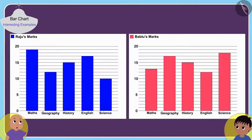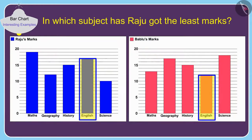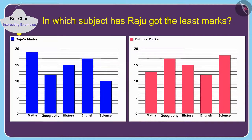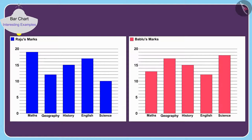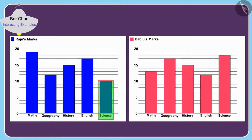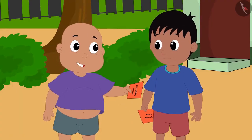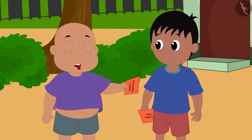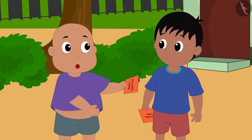Bablu points out that Raju's marks in one subject are the least among all the marks they both got. Children, can you tell in which subject Raju got the least marks? The height of the rectangle in science in Raju's bar chart is the smallest among all the bars in both charts. Hence, the lowest of all marks — 10 marks — are scored by Raju in science. Bablu offers to help Raju in science and Raju can help him in English. For now, let them go and enjoy their holidays!